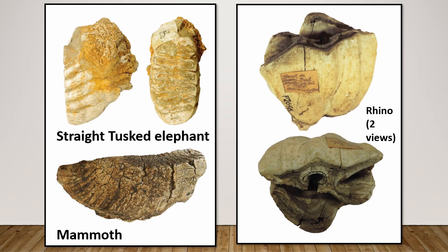Here are some fantastic Pleistocene fossils on display at Folkestone Museum. We've got mammoth from the cold periods, woolly rhinoceros also probably from cold periods. We also have straight-tusked elephant teeth — this one from quite a small individual, probably a juvenile, about seven centimetres long. Straight-tusked elephants were around during warmer periods called the Ipswichian.